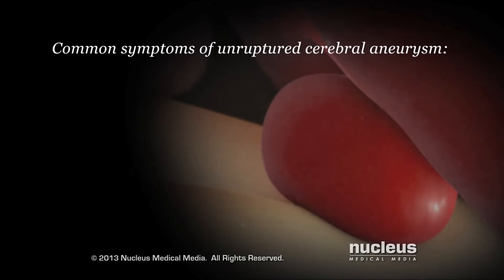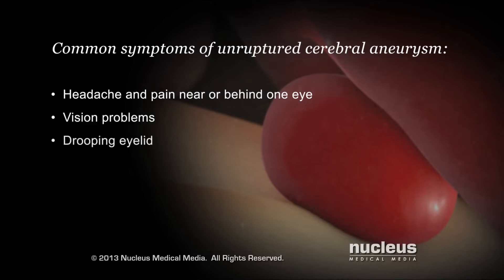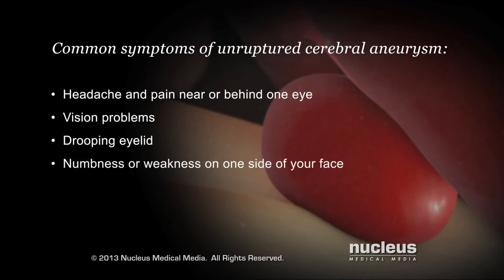An unruptured cerebral aneurysm may not cause symptoms, but large unruptured aneurysms may cause headache and pain near or behind one eye, double or blurred vision, a drooping eyelid, and numbness or weakness on one side of your face.